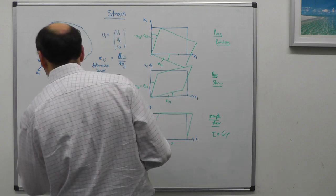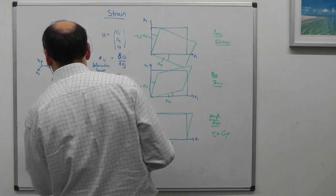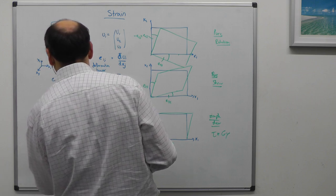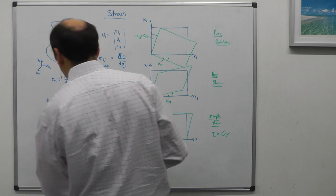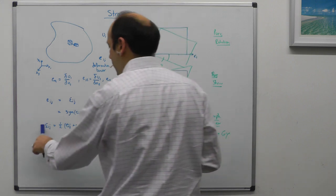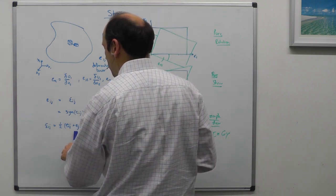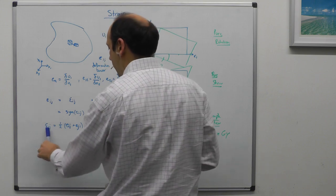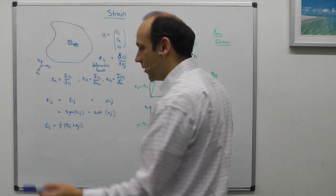What do I mean by the symmetric part? I mean strain ij is equal to one-half of eij plus eji. That is, strain 1,2 is equal to a half of deformation 1,2 plus deformation 2,1. Or strain 1,1 is equal to a half of strain 1,1 plus strain 1,1. That is, it is deformation 1,1.